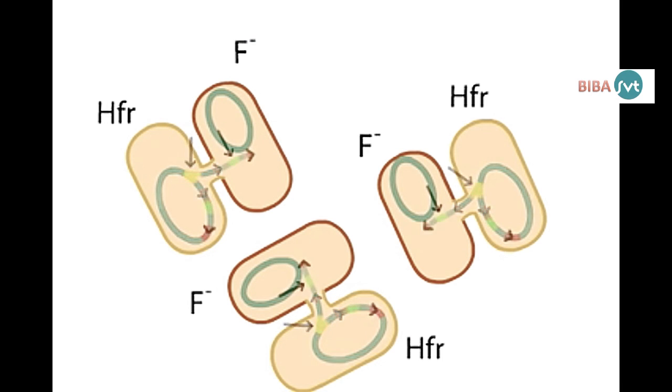Donor genes closest to the leading sides of the F origins are transferred early. Donor genes residing farther from the F origins are transferred later, some more than an hour later, if pairing is maintained.